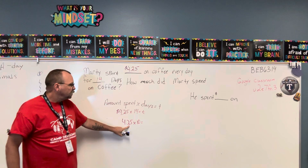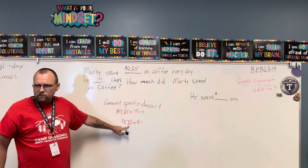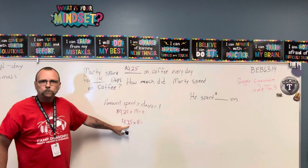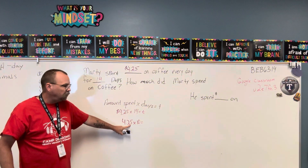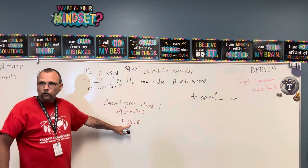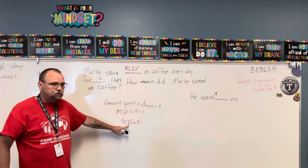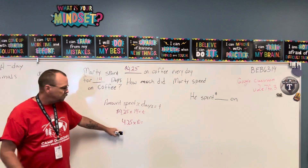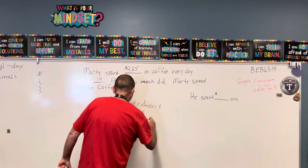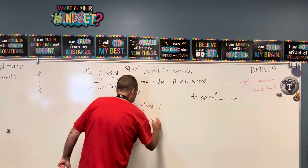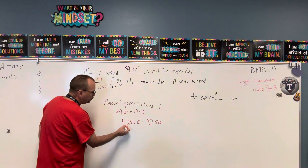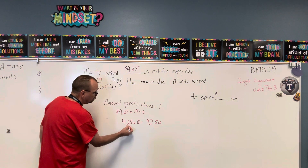So instead of two dimes, I need two dimes to be ten times bigger, so it's going to be two dollars. The dimes — instead of twenty cents — it's going to be two dollars. So what I'm actually doing is moving my decimal point to the right once. I moved it from here, and then it moves over here.